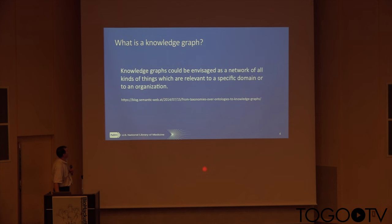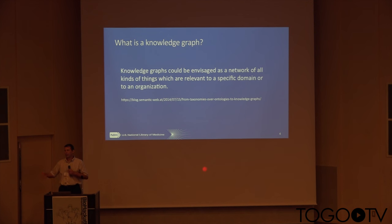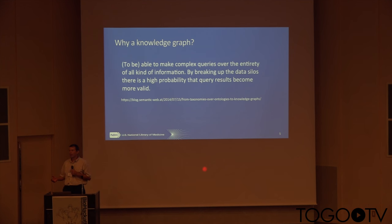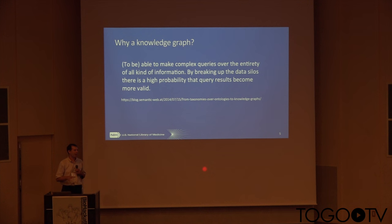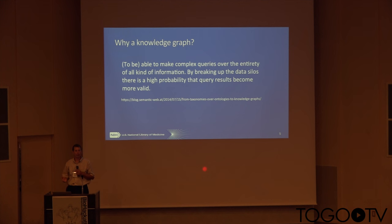A knowledge graph is essentially a network of things relevant to a particular domain or organization. Rather than having silos of information — just a database of genes, proteins, or chemicals — the idea is to break through these silos and have a network system. For a given gene, you can figure out what are the top diseases, chemicals, proteins, and pathways associated with it. Or from the chemical perspective, you can understand what a given chemical is known for.